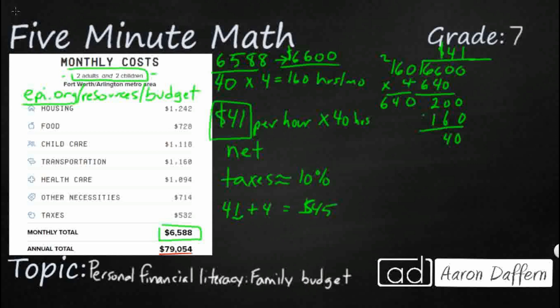Now the nice thing is you've got two adults in the house. So you can divide that by two — if each adult works, you each need to earn about $22.50 an hour and you are good to go.